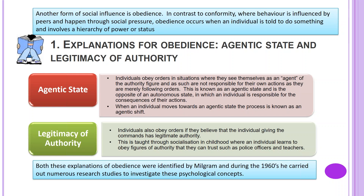The next explanation of obedience is legitimacy of authority. Here, individuals obey orders if they believe that the individual giving the commands has legitimate authority. This is taught through socialization in childhood, where an individual learns to obey figures of authority they can trust, such as police officers and teachers.